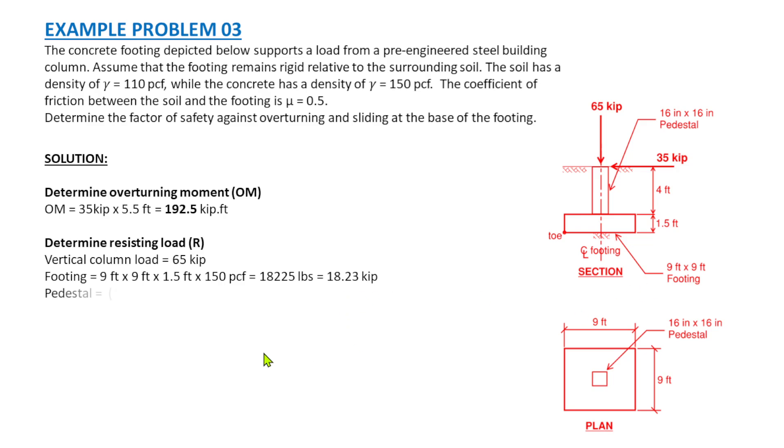For pedestal, we have 16 inches by 16 inches times 144 to convert it into feet to be consistent with our units, times 4 feet, times 150 density of concrete. That would give us 1066.7 pounds or 1.07 kips. So that is for pedestal.